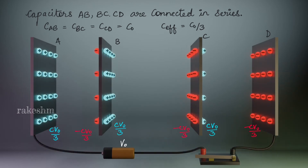Now we can see the charges which appear on the different sides of the metallic plates. On this side we have CV0/3, on this side minus CV0/3, on this side CV0/3, and so on. Next, let us connect a conducting wire between B and C.